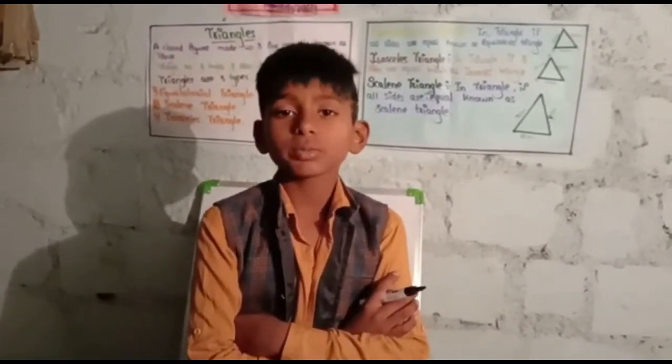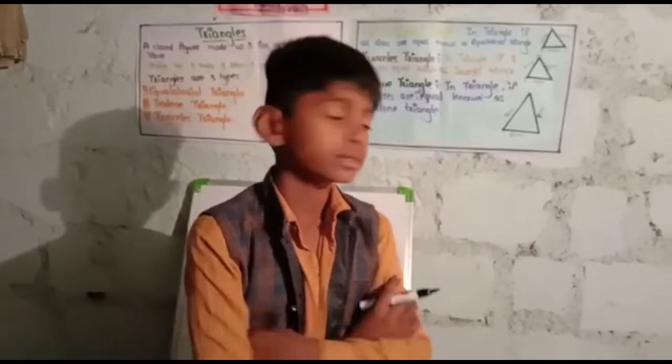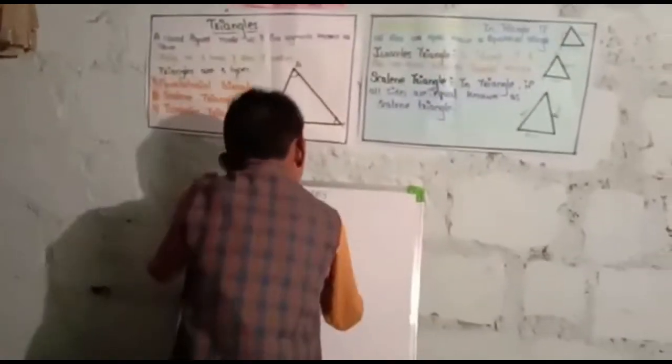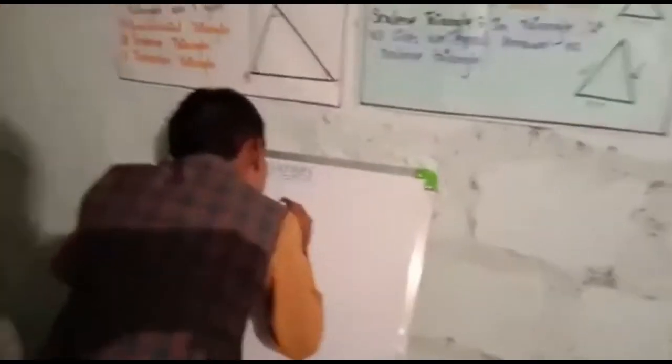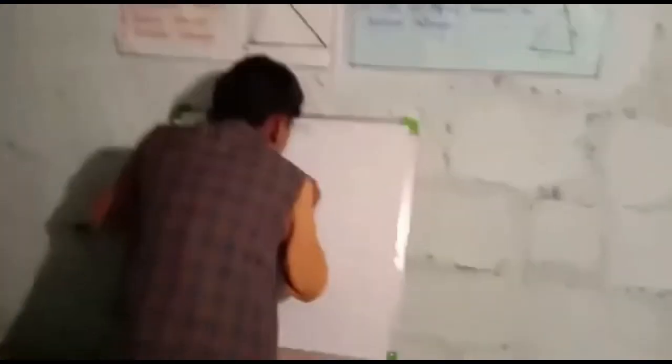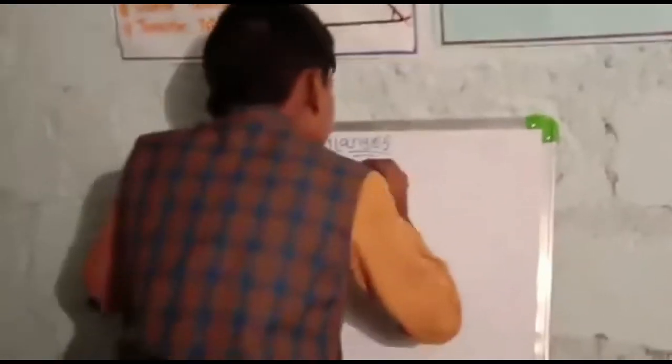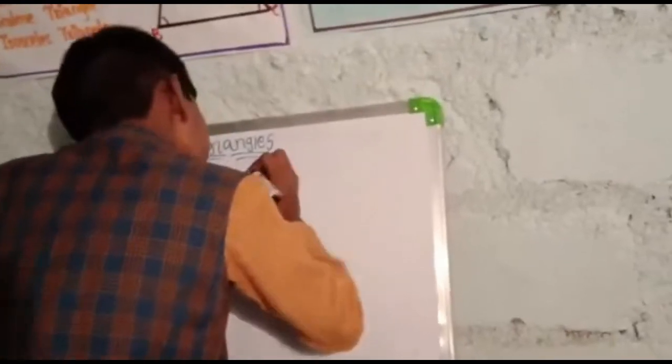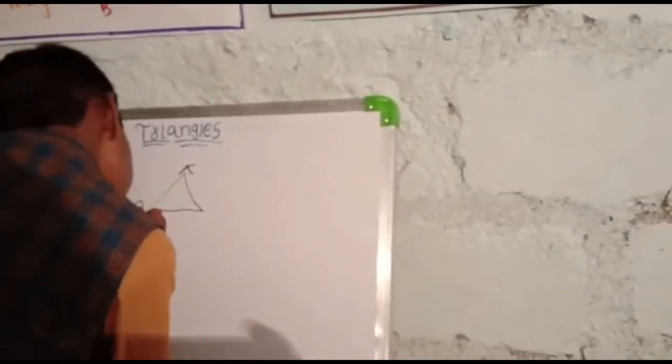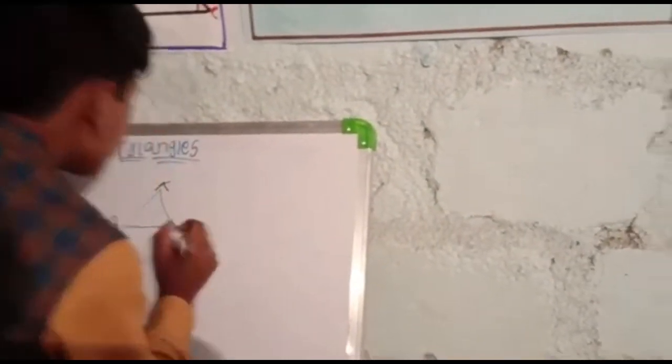Triangle means closed figures made up of three line segments. This is a triangle with vertices A, B, C.